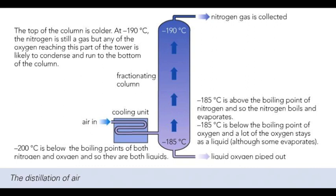In the fractionating column liquid air is warmed up to minus 185 degrees centigrade. This causes all the nitrogen to evaporate and rise up the column. Most of the oxygen stays as a liquid and is piped out of the bottom of the column. The oxygen that does evaporate condenses again at the top of the column and runs back down to the bottom.